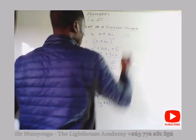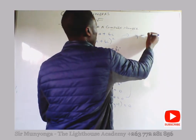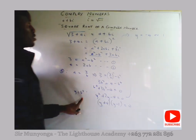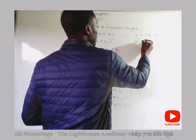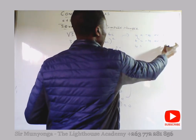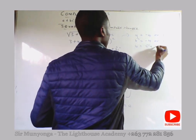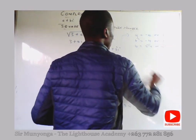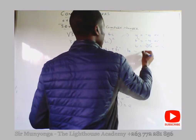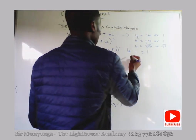So y equals minus 4 or y equals 1. Since y equals b squared, b squared equals minus 4 or 1. We reject b squared equals minus 4 as it gives no real solution, so b equals plus or minus 1.